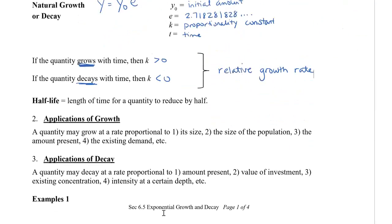This natural growth and decay can apply to many different types of problems. For example, we might want to know how something is growing in size by population, the amount that we have, or the existing demand in perhaps marketing. It also applies to decay — perhaps an investment is getting smaller and smaller, you're losing money, the concentration in a chemical compound, or maybe intensity at a certain depth as things get deeper. Let's take a look at some examples of how we could apply this formula.